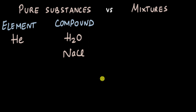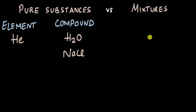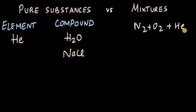A mixture is formed when pure substances mix with each other. Let's say we have helium plus water in a beaker — that will be a mixture. Or if we look at the air around us, it is made up of many gases: nitrogen, oxygen, some helium, some carbon dioxide. All of these gases make up the air around us and therefore air is a mixture.